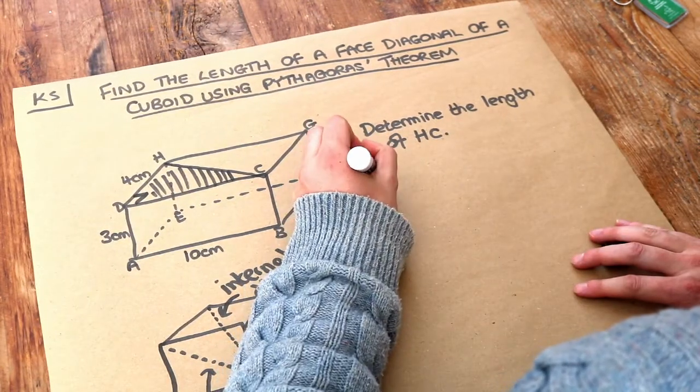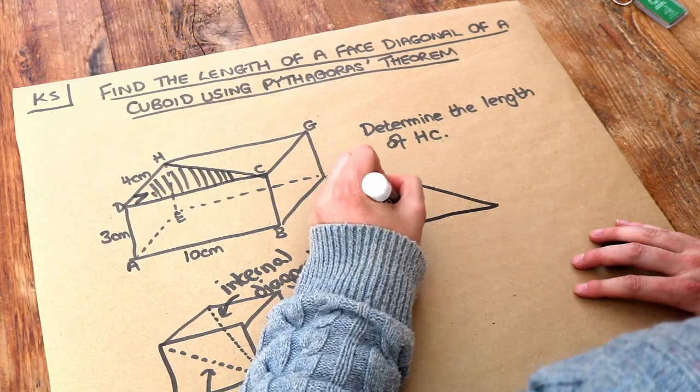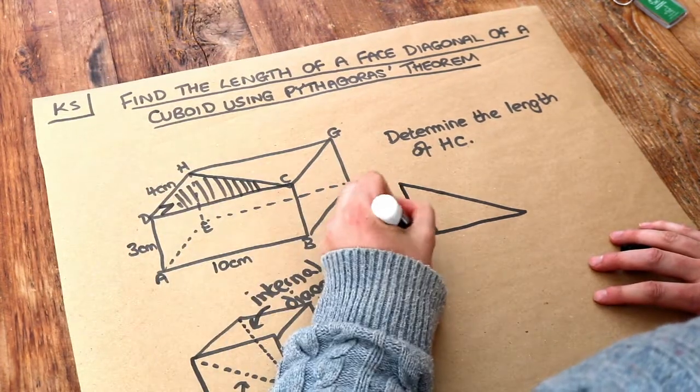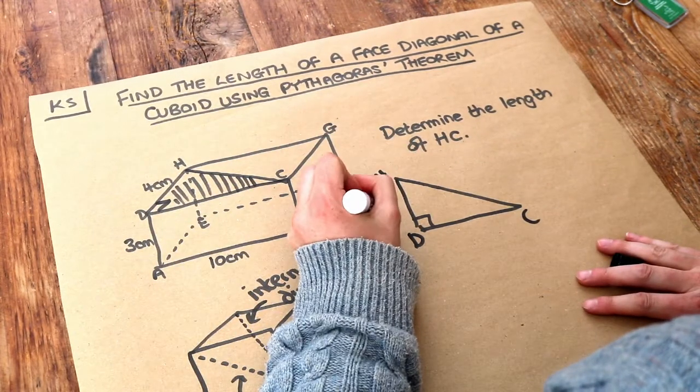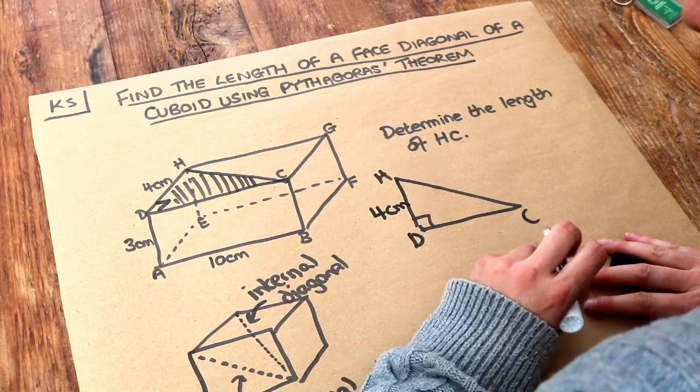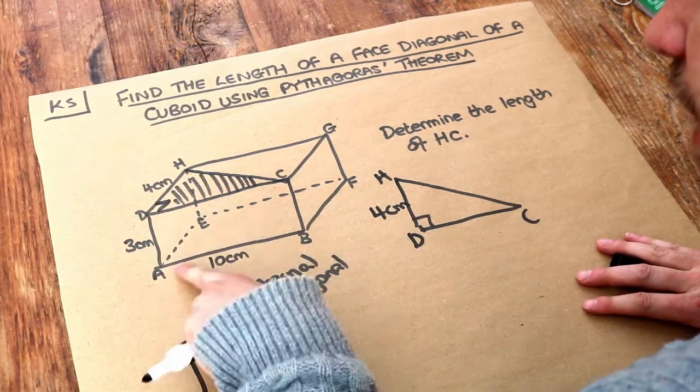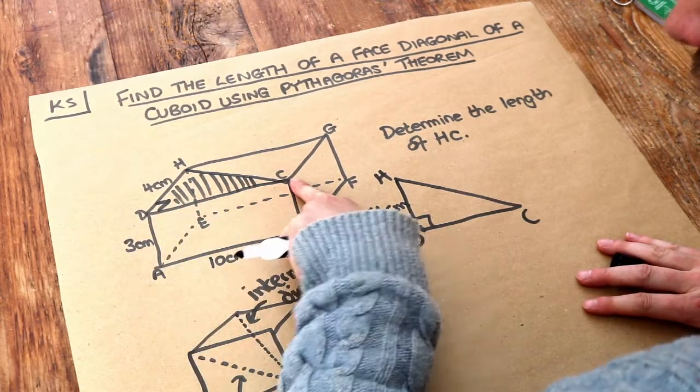So let's just draw that out separately to help us visualize it. We've got the D there, H there, and C. We've got that 4cm, and we also know that bottom length, you can see that that's 10cm. DC is the same as AB.